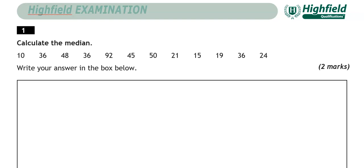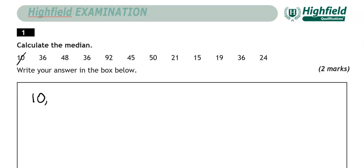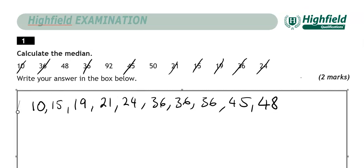So to work out the median we've got to put the numbers in order and then pick the middle number. So I'm going to put them from the smallest to the largest. The smallest one here is 10. Then we have 15, 19, 21, 24.